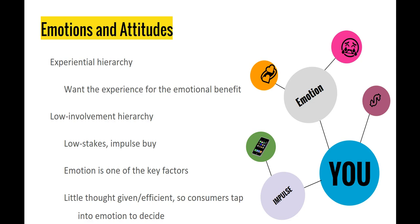If you're dealing with the low-involvement hierarchy — a low-stakes impulse buy like a candy bar or a cup of coffee — emotion is one of the key factors, but people give these purchases very little thought and want them to be efficient. Consumers tap into their emotions to make quick snap judgments about what flavor snack or kind of coffee to get. But there's also a reasoning aspect appealing to efficiency. You want people to feel they're making a quick purchase and getting on with their lives — unlike an experiential purchase, where you appeal purely to emotion.